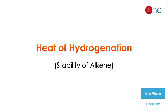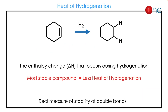Welcome to One Chemistry — this is the One Minute Chemistry series: quick concepts in chemistry. In this video we are going to see heat of hydrogenation, which is basically the stability of alkenes.